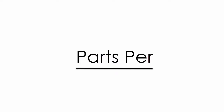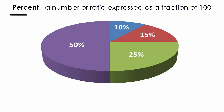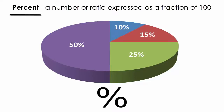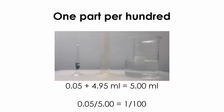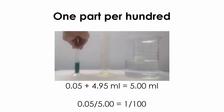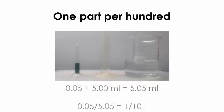Parts per hundred you are already familiar with because it's the same thing as percent. The term percent comes from Latin, as does the symbol that we use for it. You can see a visual demonstration of one percent, or one part per hundred, if you drop one drop of food coloring in 4.95 milliliters of water, because one drop is about 0.05 milliliters. Adding one drop to five milliliters would actually be one part per 101, but we don't need that level of accuracy for this demonstration.